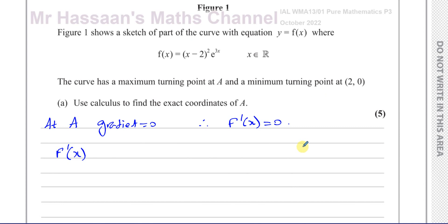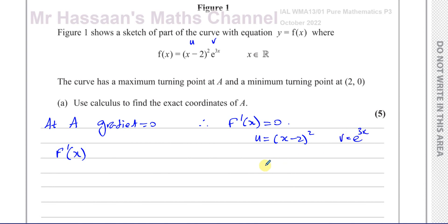A easy way to apply the product rule without memorizing the formula is as follows. I call one of the products U and the other V. So I'll call U = (x-2)² and V = e^(3x). Now we differentiate U and differentiate V separately.